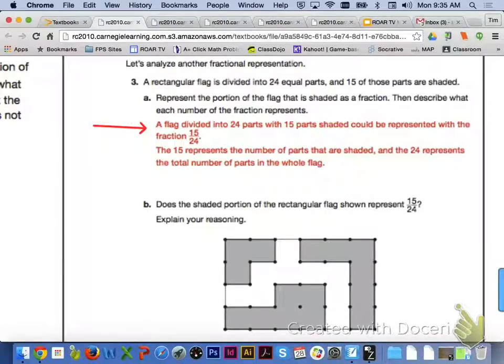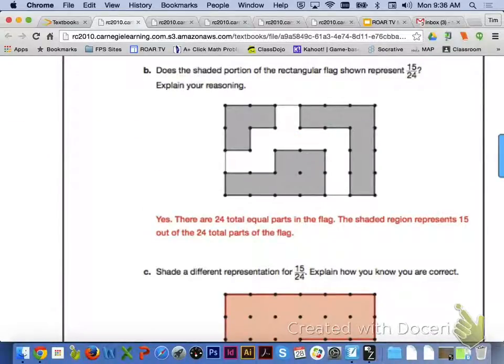For letter A, the first thing that we want to do is represent the portion of the flag that is shaded as a fraction. That is going to be 15 twenty-fourths, and describing what each number of the fraction represents. 15 is going to represent the number of parts that are shaded, and 24 is going to represent the total number of parts in the whole flag. For letter B, yes, there are 24 total equal parts in the flag, and the shaded region is representing 15 out of the 24 total parts of the flag.